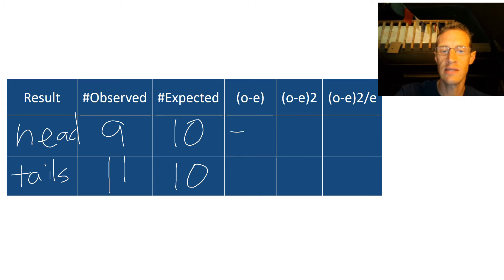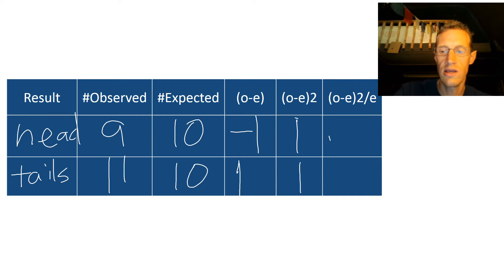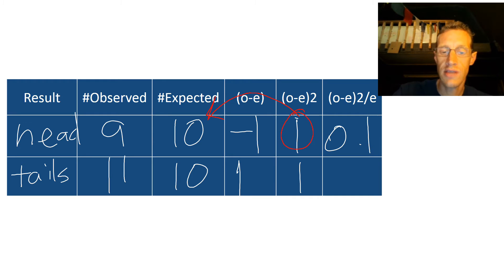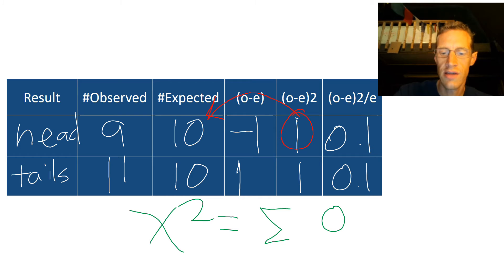Then we write in our observed values. In our experiment, we had 9 heads and 11 tails. Then we write in the next column what we expected — out of 20 flips, we would expect 10 heads and 10 tails. The rest of this takes us through the math steps, building the chi-square equation one step at a time. In the first row, O minus E is 9 minus 10, which becomes negative 1. Don't worry about the negative — that cancels out when we square it. Then 11 minus 10 gives us positive 1. We square both: 1 squared is 1. Then we divide each by the expected value — 1 divided by 10 is 0.1, and the second row also gives us 0.1. To get chi-square, we take the sum of all the values in the last column. Adding those together gives us a chi-square of 0.2.